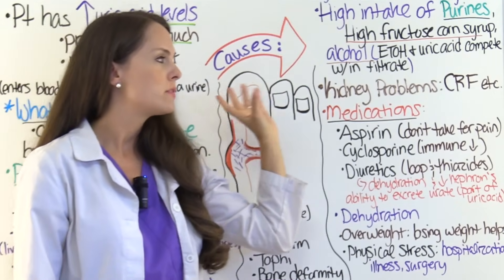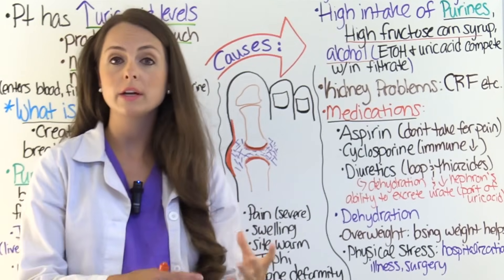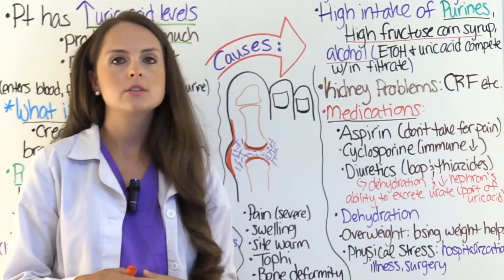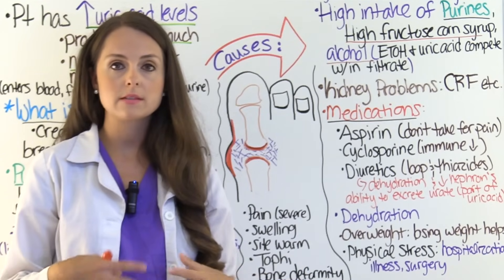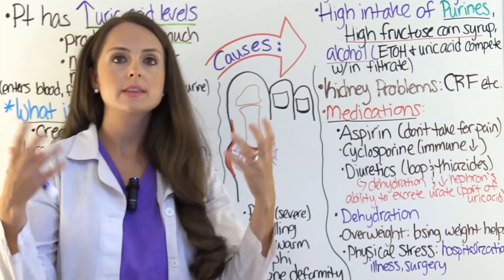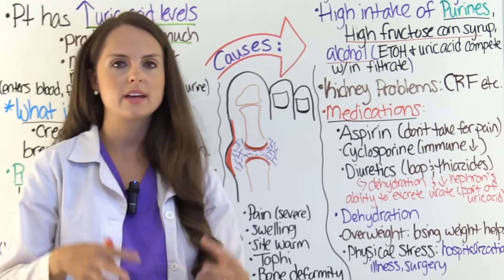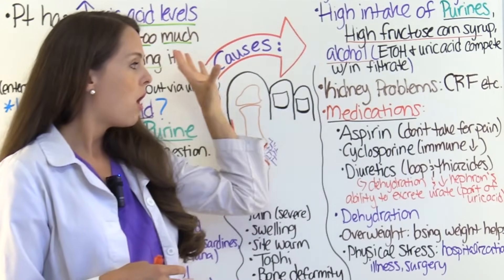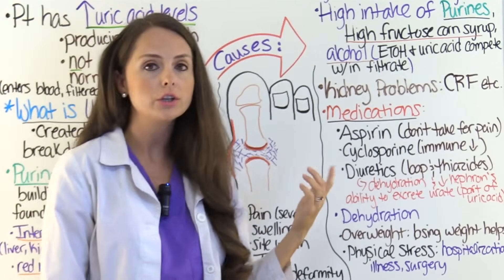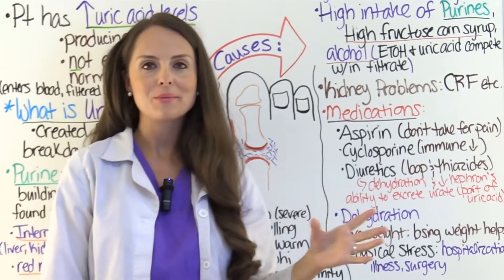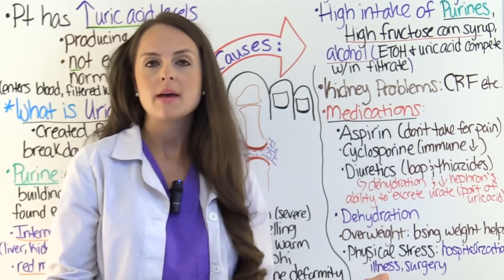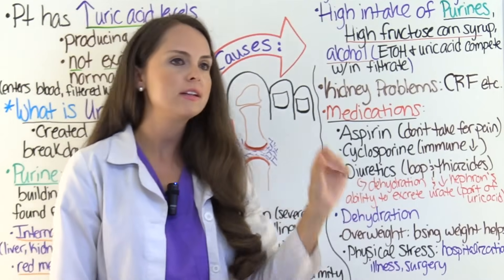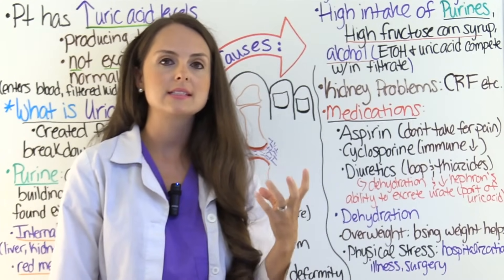Other things that can cause elevated uric acid are kidney problems like chronic renal failure, because those nephrons just aren't working anymore — the glomerulus is filtering the blood and removing waste products, but chronic renal failure can't do it, so those waste products including uric acid build up. Another cause is medications, including aspirin. If you see a test question asking which PRN medication to give a patient having gout pain, don't pick aspirin, because aspirin even in the lowest doses can increase uric acid levels.